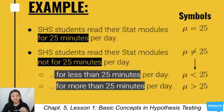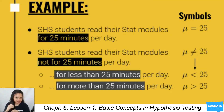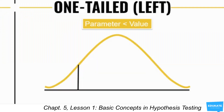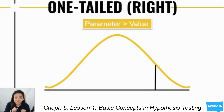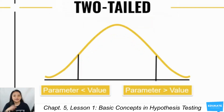The equal sign can also mean there is no significant difference or relationship, while not equal to can mean there is a significant difference or significant relationship. If it's one-tailed to the left, or left-tailed, you have your parameter less than the value. If it's one-tailed to the right, or right-tailed, you have your parameter greater than the value. And if you have two-tailed, you have the parameter less than the value and the parameter greater than the value.